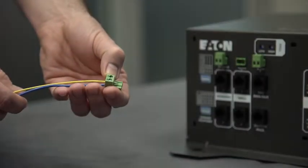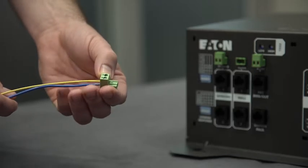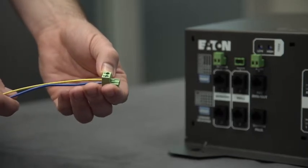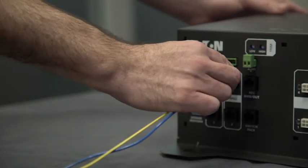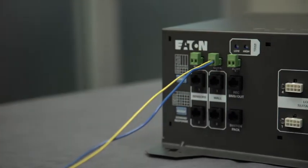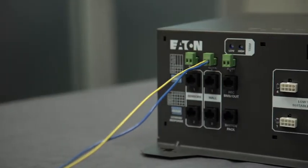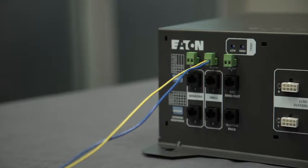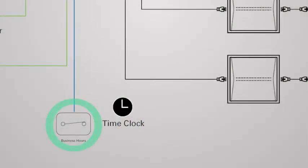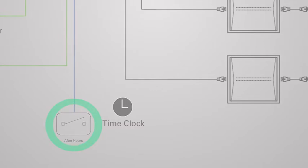To attach the time clock to the system, connect 18 gauge two conductor twisted pair between the time clock's dry contact output and the power module's time clock terminal. This is not a polarity sensitive connection. The external time clock must be programmed so that it closes the contact during business hours and opens the contact after hours.